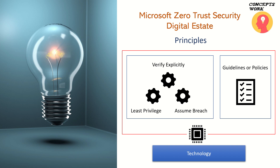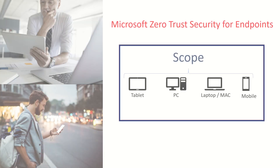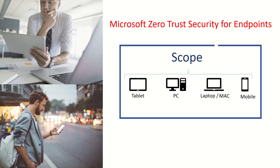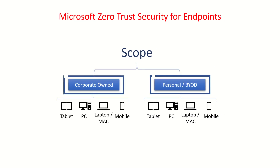Let's begin with understanding Zero Trust security for endpoints. The very first thing to keep in mind is scope — making sure you are catering to all devices irrespective of their type, whether it's a tablet, PC, laptop, Mac, or a mobile device. You also have to take care of both categories: whether a device is corporate-owned or a personal device.